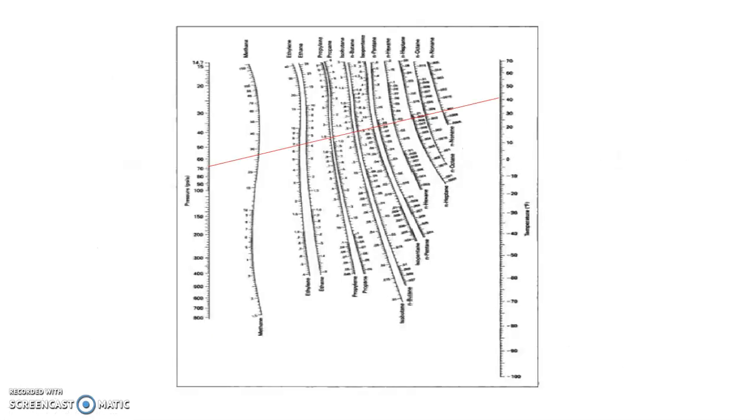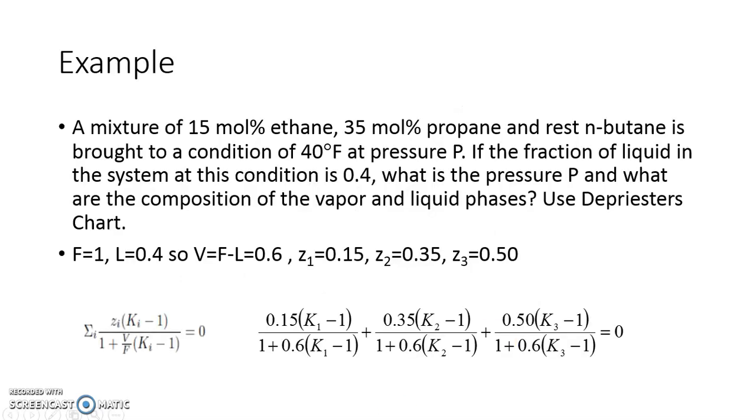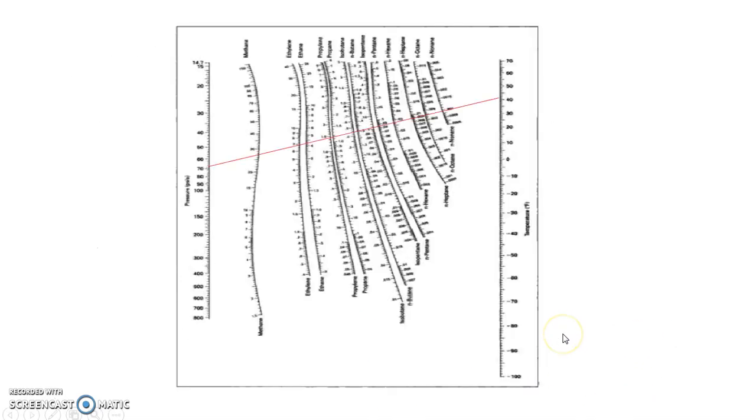What we do is we draw a line from 40, say for example 70 PSI, here we find K1, K2, K3. Substitute them in the equation. If it is not 0, draw another line. Check whether that summation is 0 or not, draw another line.